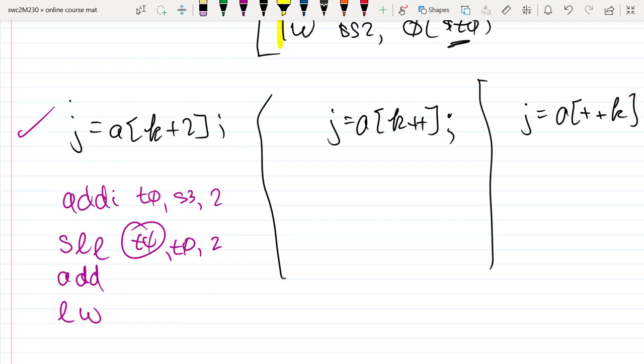I'll just keep using the one single temporary register. And now that I have that register multiplied by, now that I have the index k plus 2 multiplied by 4, what I want to do is add that value to the base address of the array.